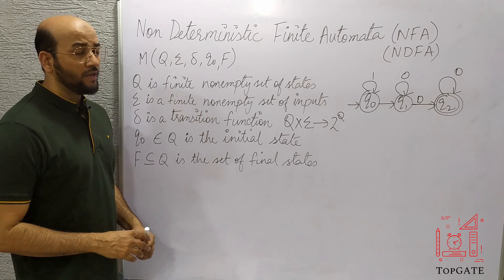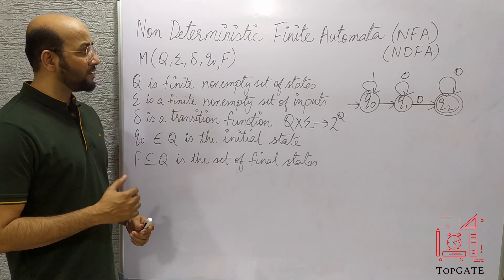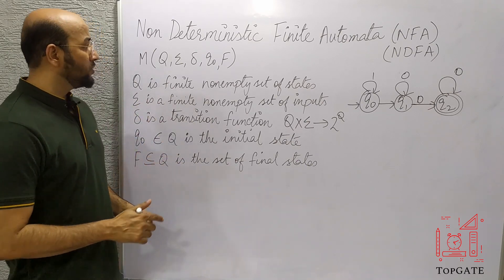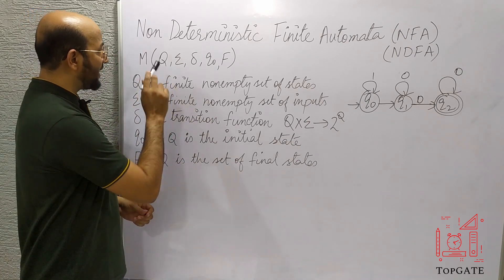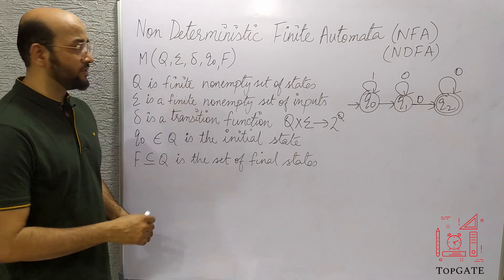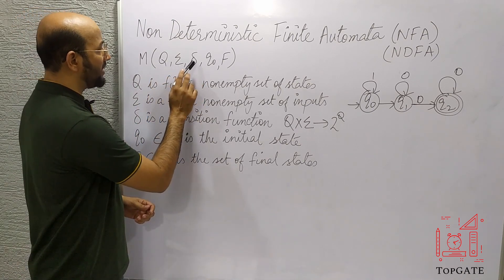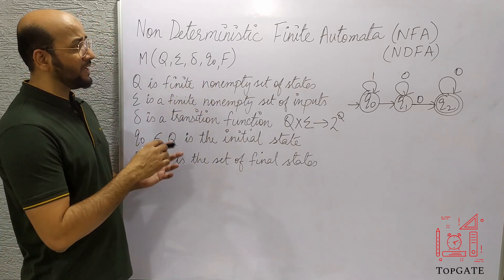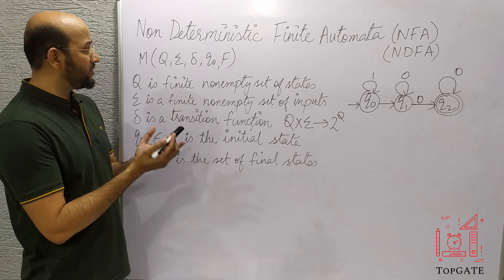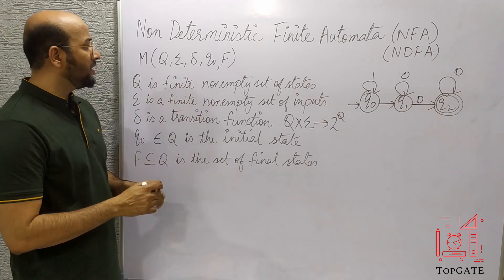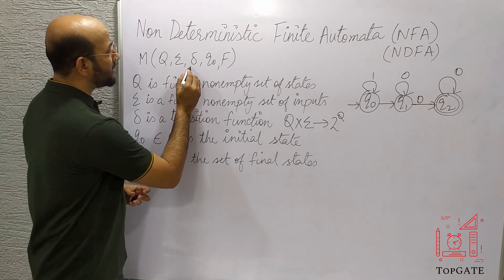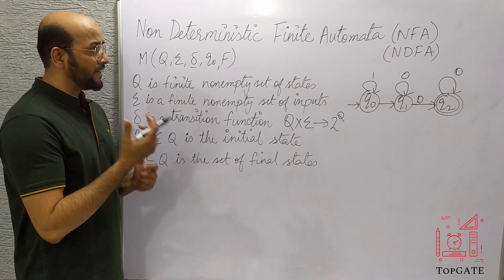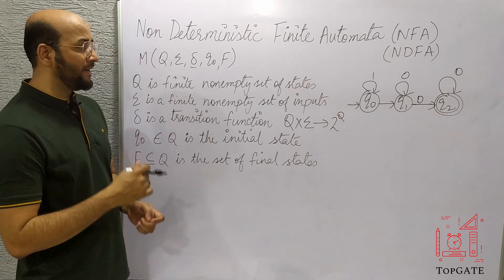In theory of computation, any machine that we study, we have to represent that machine in the form of a mathematical notation or with some tuples. Like DFA, in NFA also we have the same five tuples: Q, sigma, delta, Q0, and F. But the difference between DFA and NFA lies in delta. This delta is responsible for making a finite automata a NFA or a DFA.